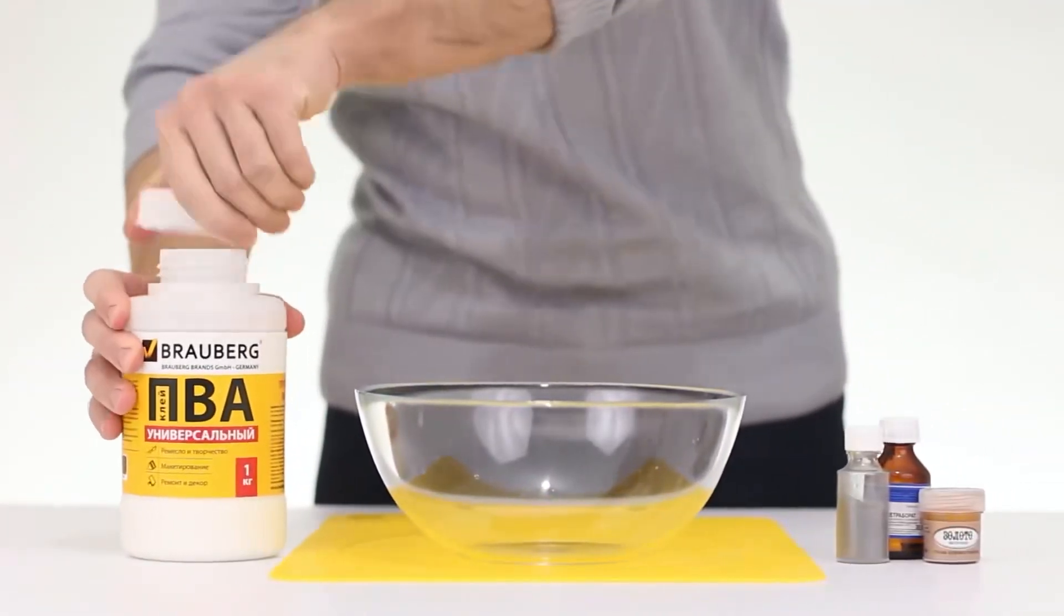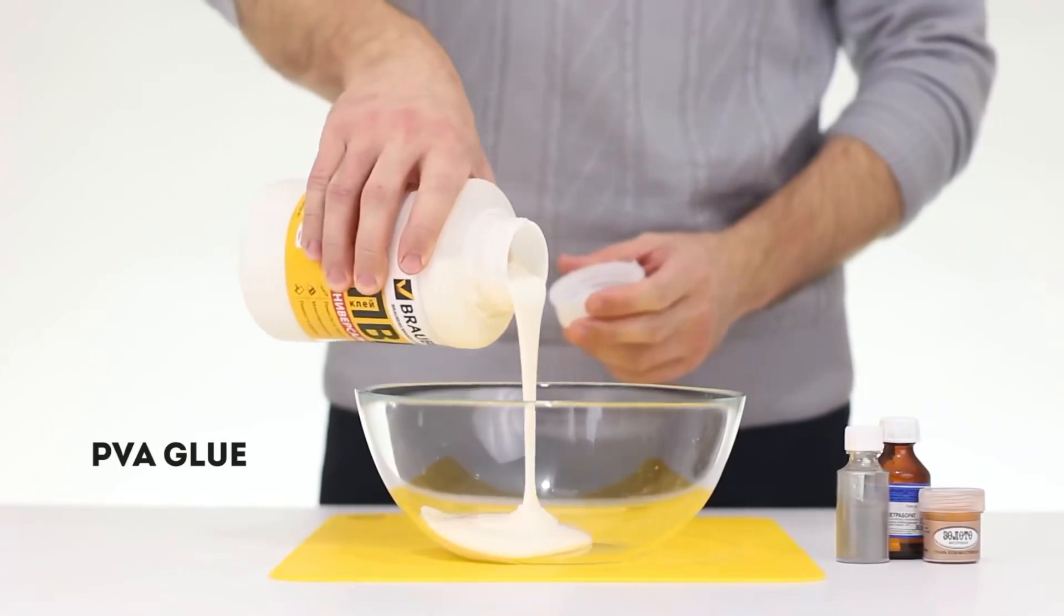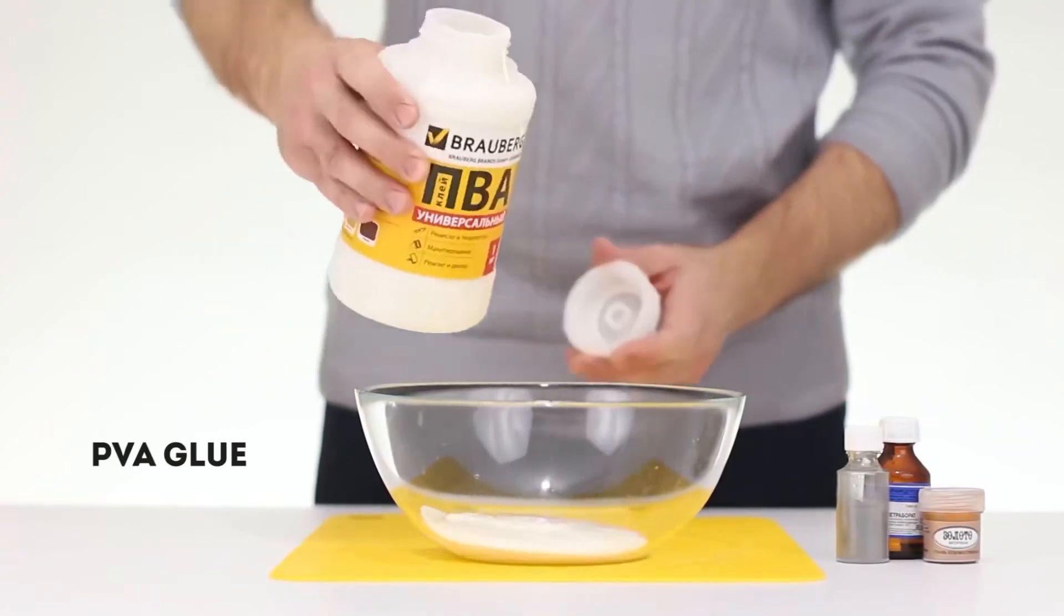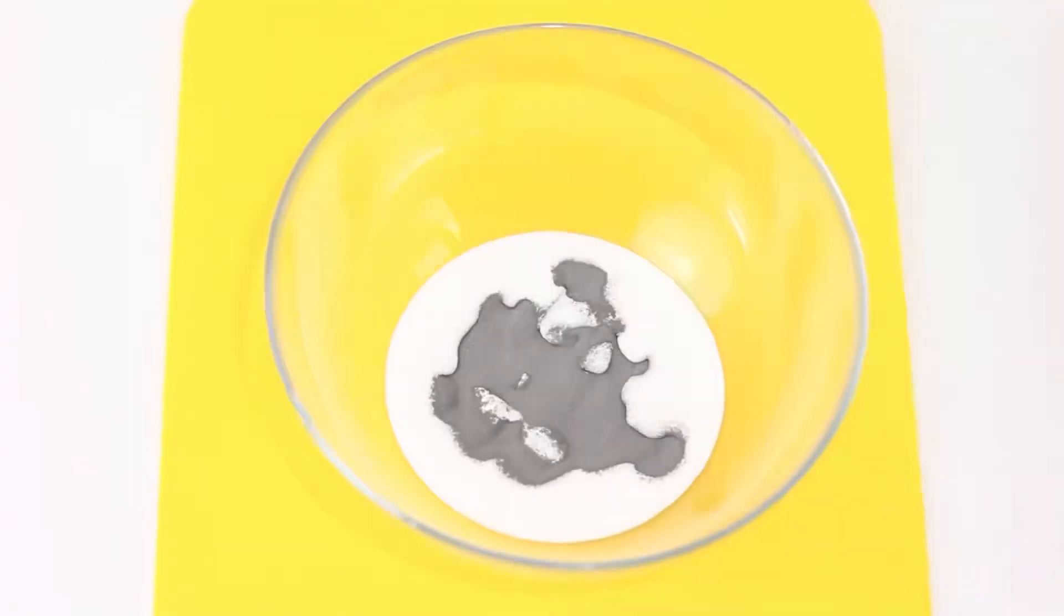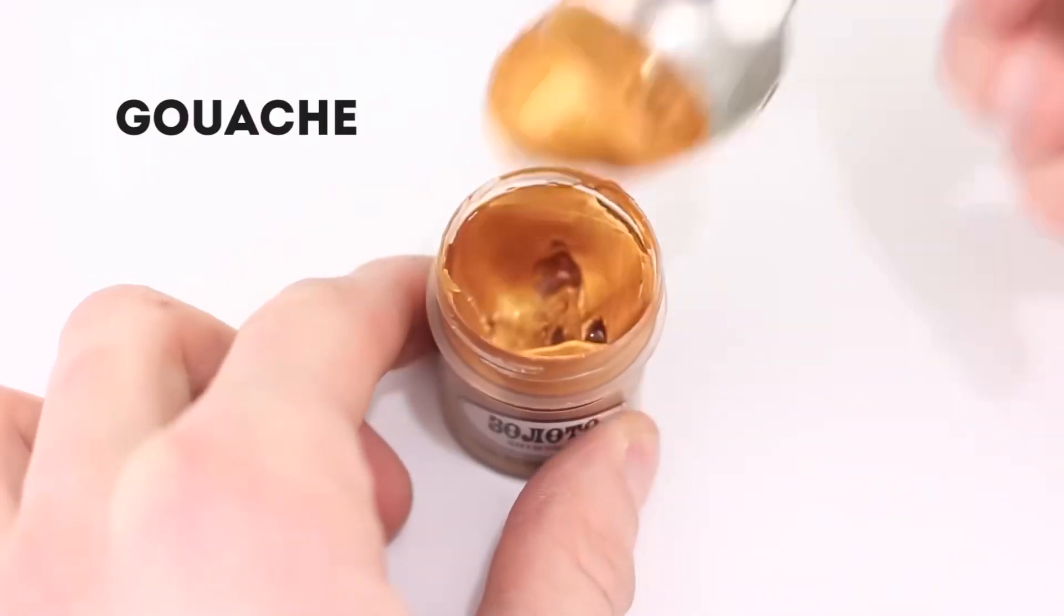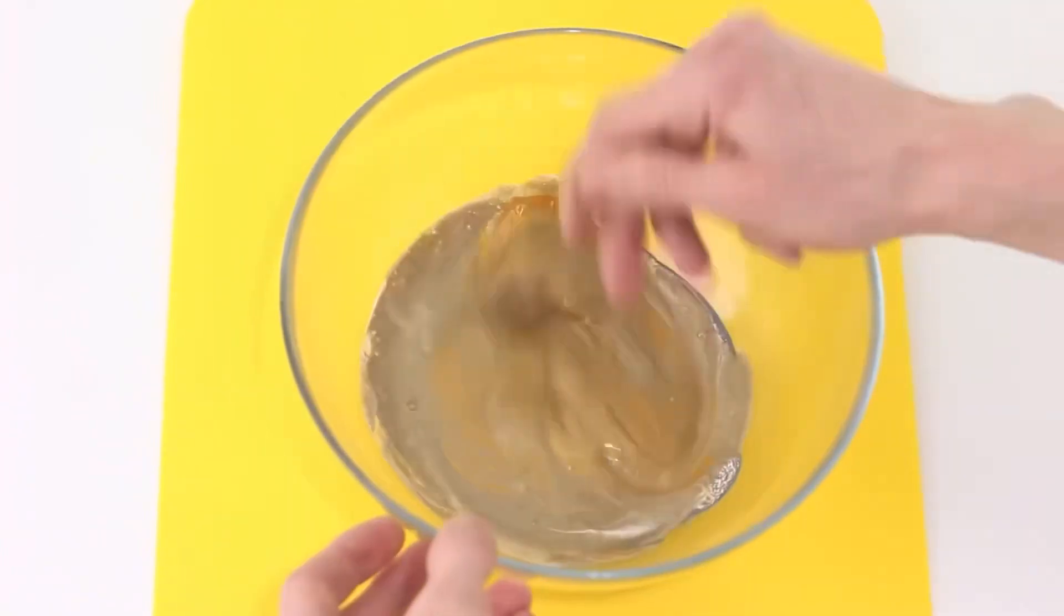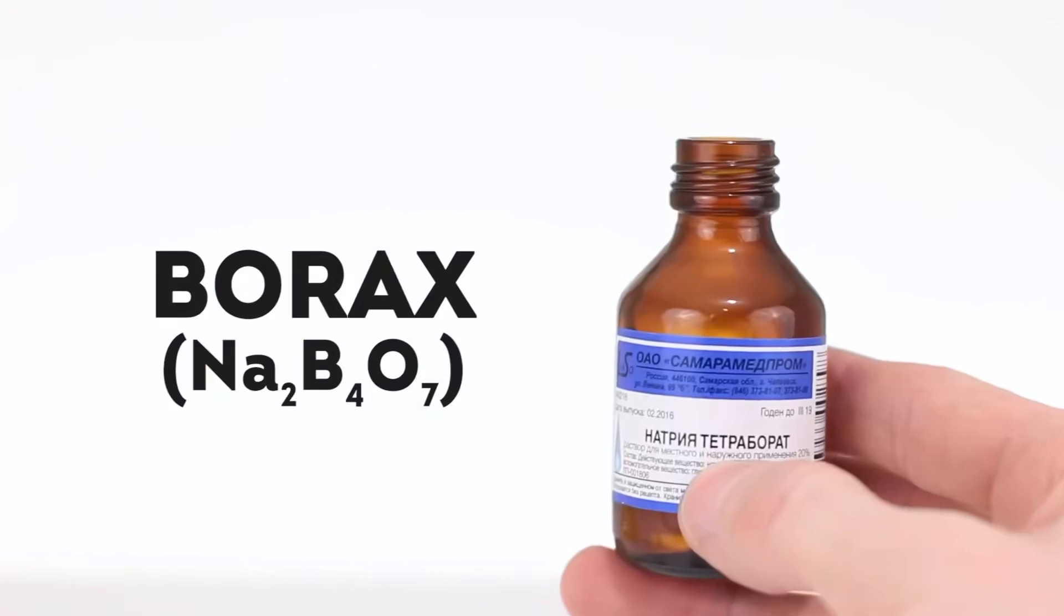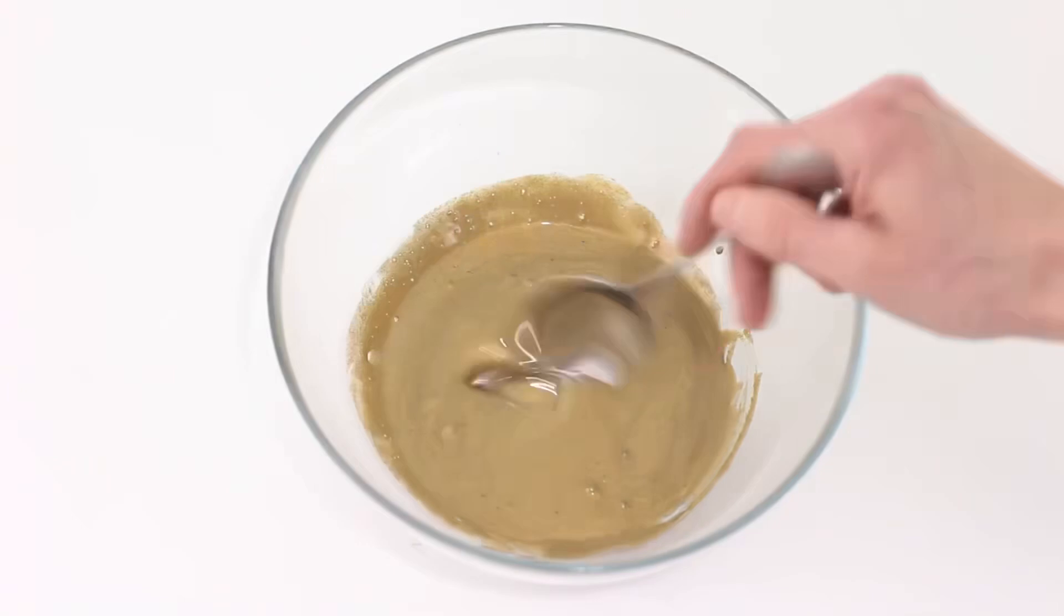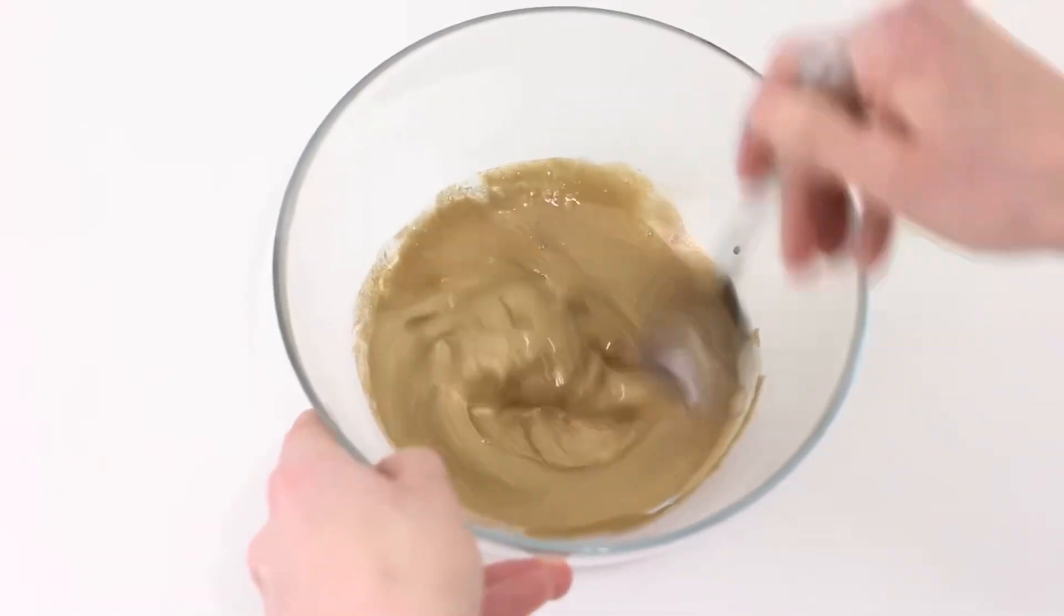Pour some PVA glue into a bowl. Add some steel spraying and bright gouache. Mix the mass until smooth. And now add sodium and mix it until the mass turns into real slime.